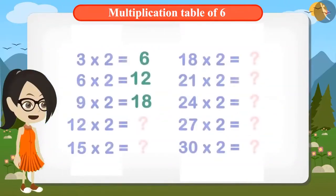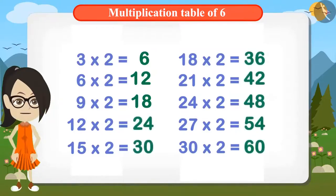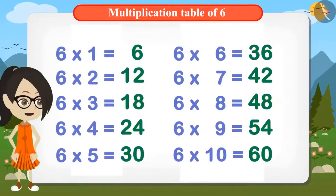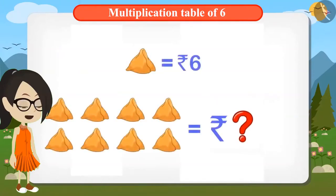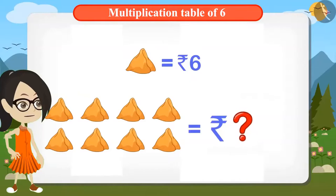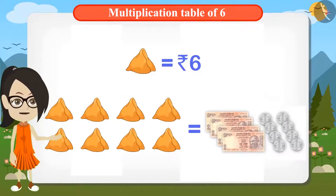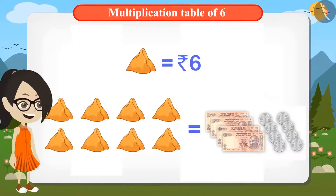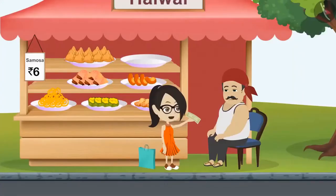We have already written down the table of 6. Now we can find out the cost of 8 samosas. That will be 6×8, which is 48 rupees. Now I will give 48 rupees to Chagu Uncle. Vandana has figured out that 8 samosas will cost 48 rupees at the rate of 6 rupees per samosa. Here it is, Uncle, 48 rupees. Oh wow, Vandana! You have calculated the amount correctly.